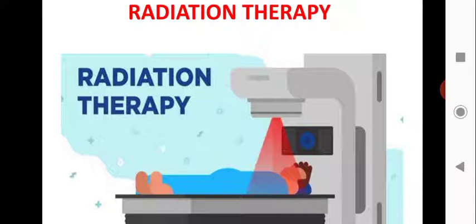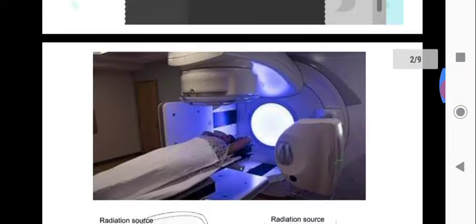Cancer cells are cells which keep multiplying for a large number of times. That type of cells need to be killed or destroyed by applying external radiations. That treatment is called radiation therapy. We will now see in detail what radiation therapy is.